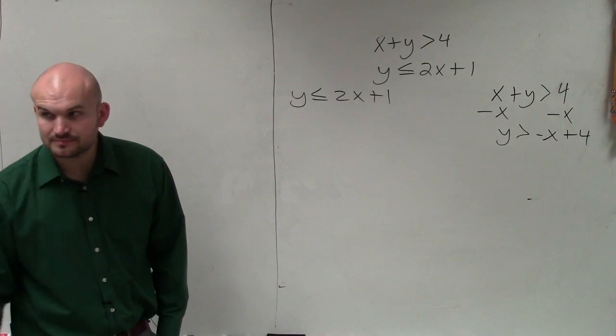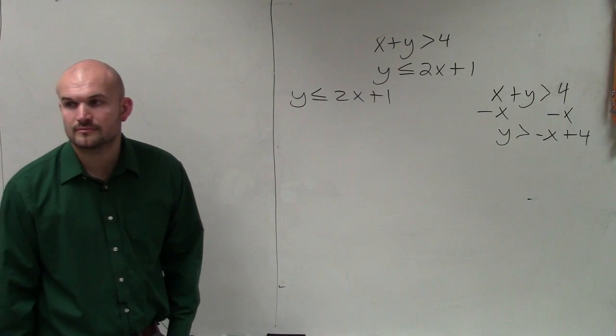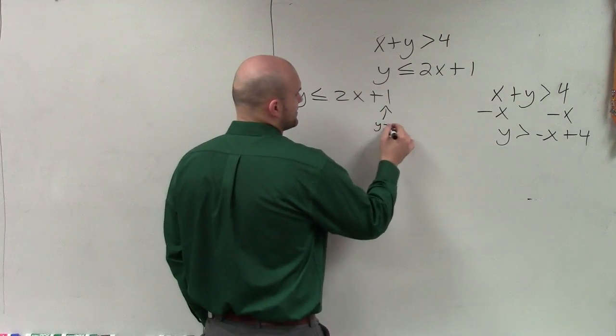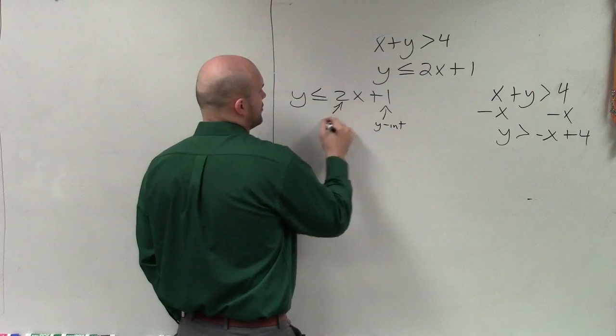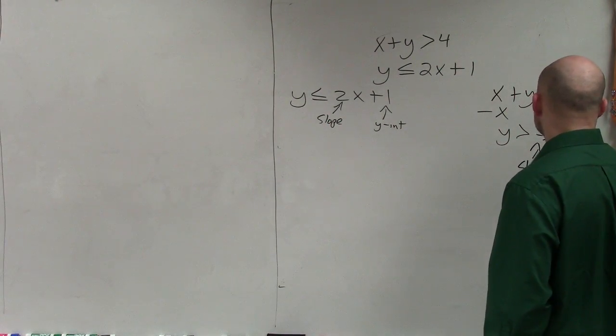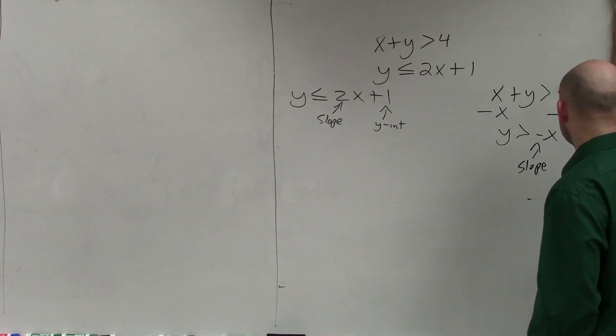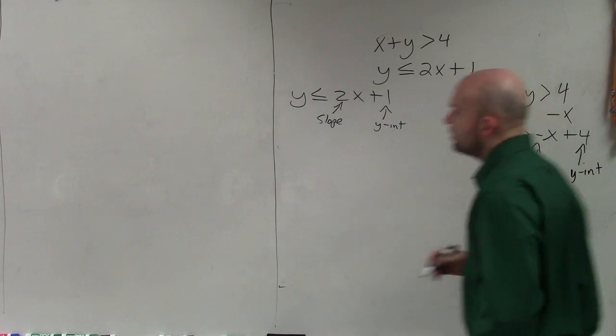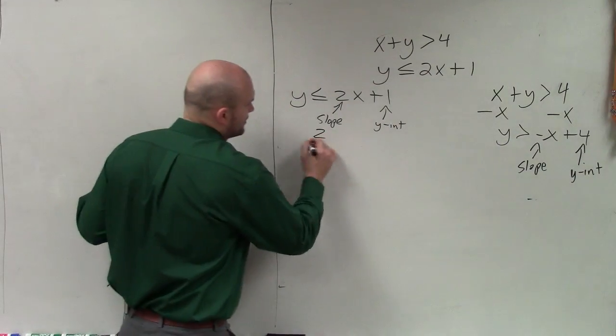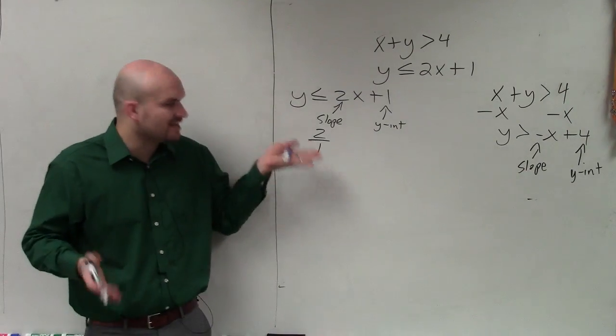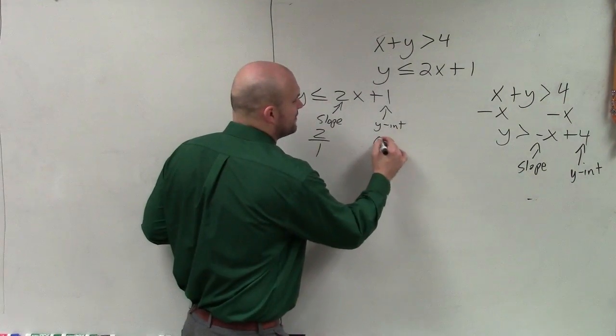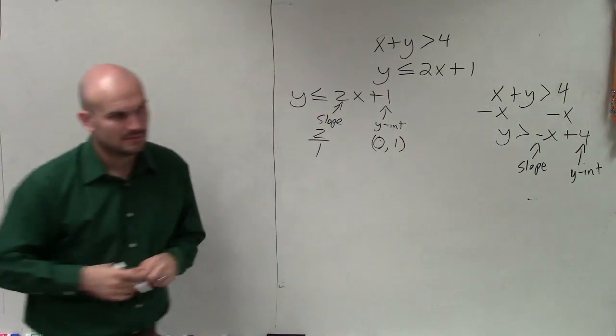For each equation, I'm going to identify the y-intercept and the slope. You don't have to do this for every problem, but I'm doing it because there are a couple important things I want you to know. First, remember we always want to rewrite the slope as a fraction. Rather than writing the slope as 2, think of it as 2 over 1. And the y-intercept we always want to think of as a coordinate point.